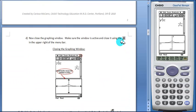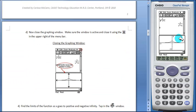Next, students will close the graph window by tapping in the window to make sure it's selected and tapping the X in the upper right hand corner.